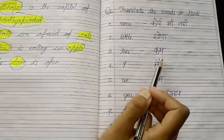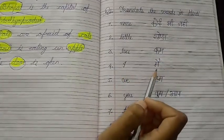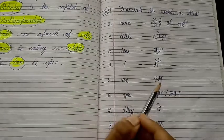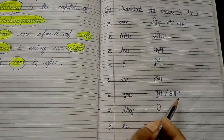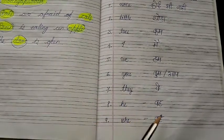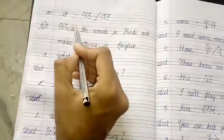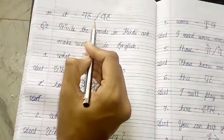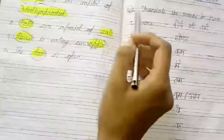Next, 'less' translates to 'kam'. Then 'I' translates to 'main'. 'We' translates to 'hum'. 'You' translates to 'tum'. 'They' translates to 've'. 'He' translates to 'wah'. 'She' also translates to 'wah'. And 'it' translates to 'ya' or 'wah'. So these were the first ten questions of Question Number 1 — translate the words in Hindi.